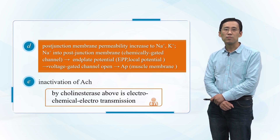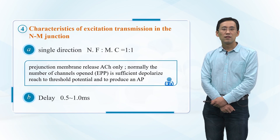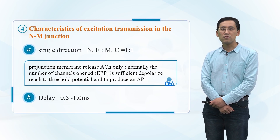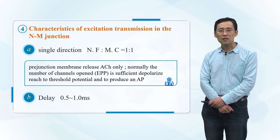The end plate potential causes a local potential, so the voltage-gated channel opens and produces the action potential for the muscle membrane. After that, the inactivation of acetylcholine is a very important process — cholinesterase clears the acetylcholine, completing the electrochemical transmission.